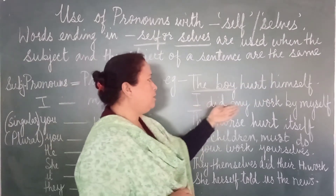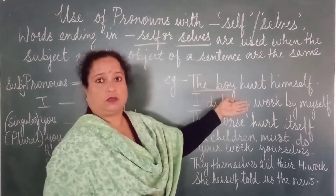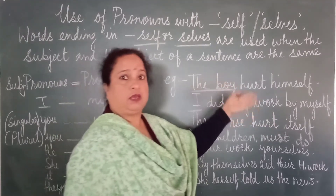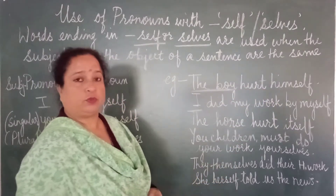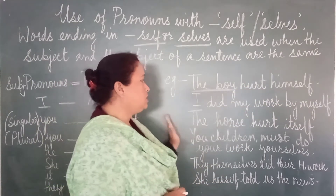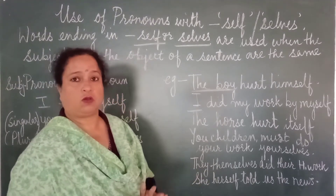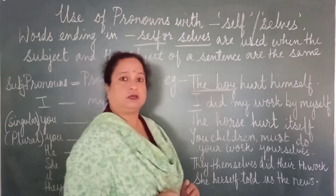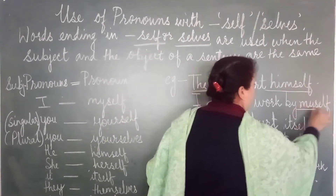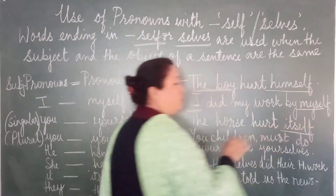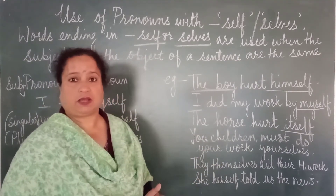Likewise, I did my work by myself. So who did that work on his own? I, myself did the work. Next, the horse hurt itself. So who did the horse hurt? It hurt itself. So children, himself, myself, itself shows us that the action was done by the subject itself.